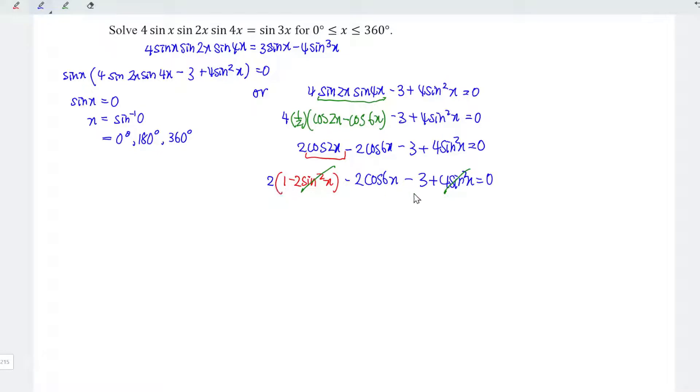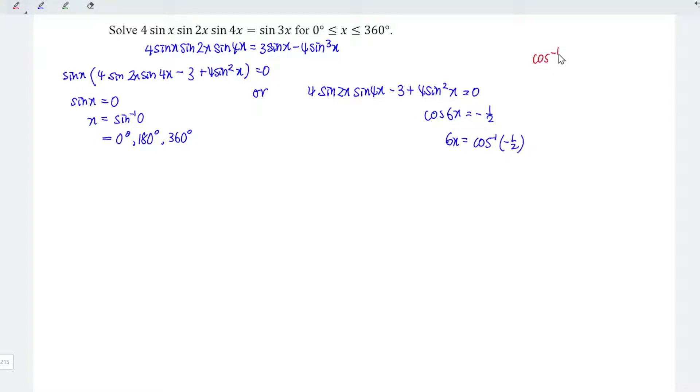So we left 2 minus 3 is minus 1, and this term remains minus 2 cos 6x. And the right-hand side equal to 0, which means that cos 6x is equal to negative 1 over 2. In other words, 6x is equal to arccos negative 1 over 2. Recall that arccos 1 over 2 is equal to 60 degrees.